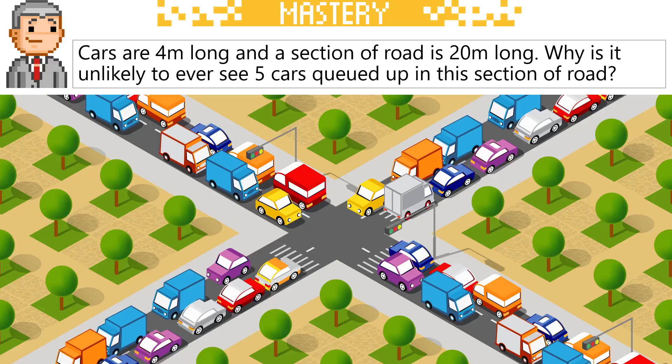Let's finish this topic with this question. Cars are 4 metres long and a section of road is 20 metres long. Why is it unlikely to ever see 5 cars queued up in this section of road? If you know, write it in the comments below.